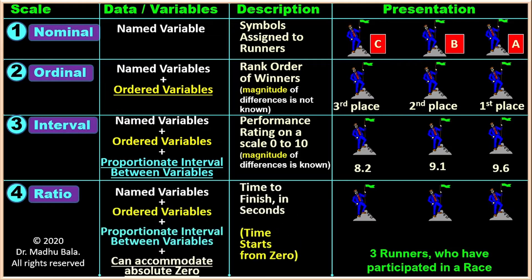Ratio scale possesses the characteristics of named variable, ordered variable, proportionate interval between variables, and it can accommodate absolute zero. Here we are measuring the time to finish in seconds. Runner A has taken 13.4 seconds, B has taken 14.1 seconds, and C has taken 15.2 seconds. The time starts from 0, so in ratio scale, 0 is considered as a starting point — that is why it is said to have an absolute zero or true zero.